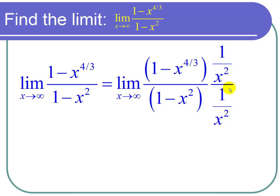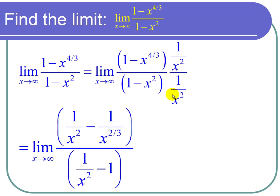So if I multiply the top by 1 over x squared, I get 1 over x squared minus 1 over x to the 2 thirds. And that's because 2 minus 4 thirds is 6 thirds minus 4 thirds, which is 2 thirds. And the bigger number gets its place. So the x goes in the denominator.